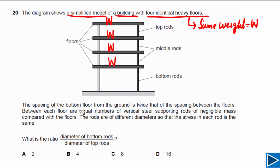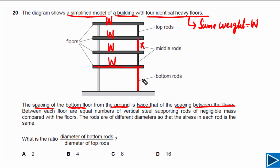Next, it is given that the spacing of the bottom floor from the ground is twice that of the spacing between the floors. Let's say the spacing between floors is equal to x. The spacing between the bottom floor and the ground is twice that, so it is equal to 2x.